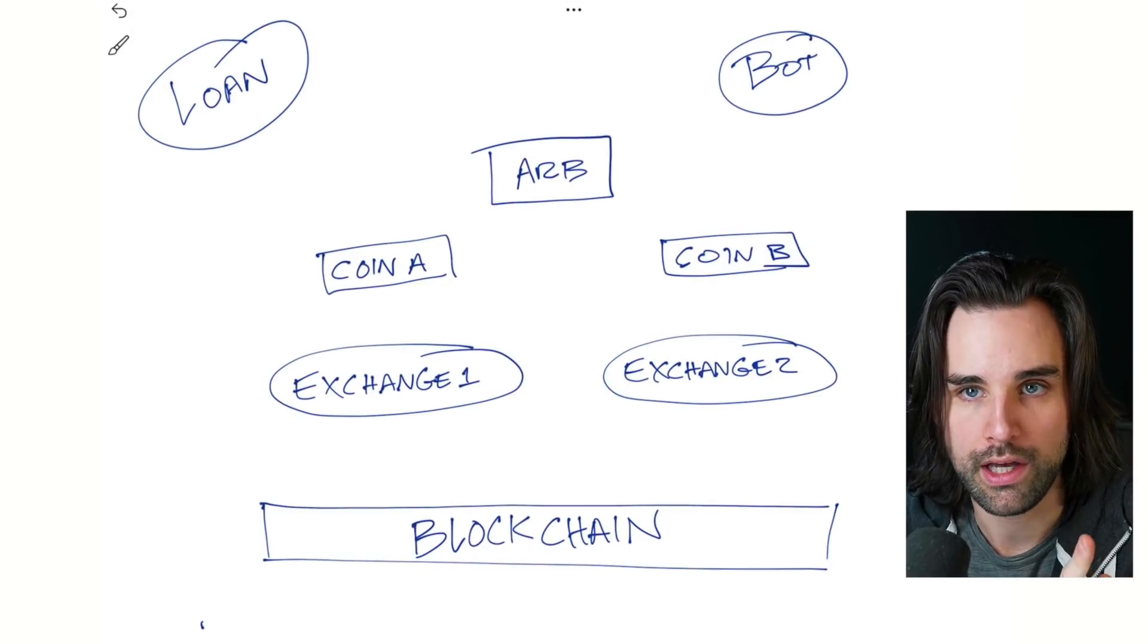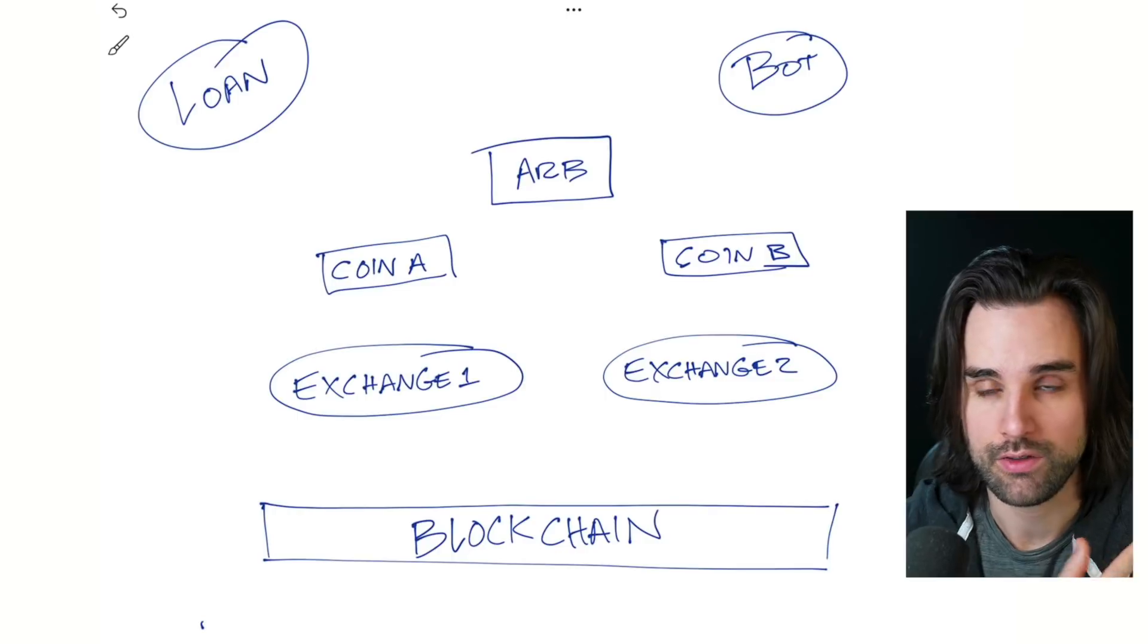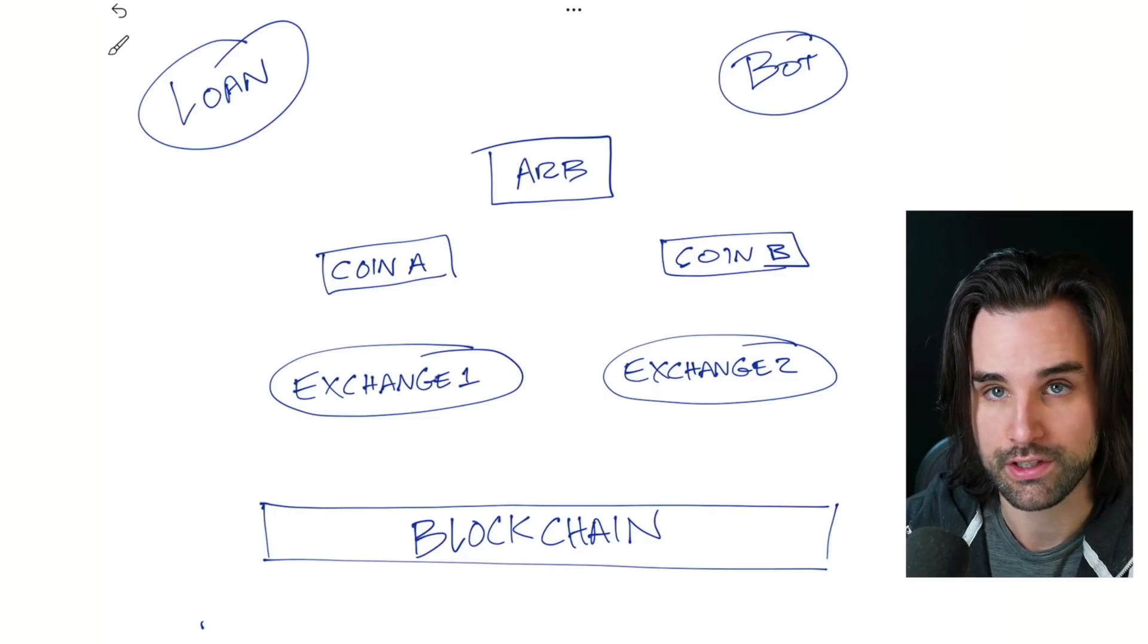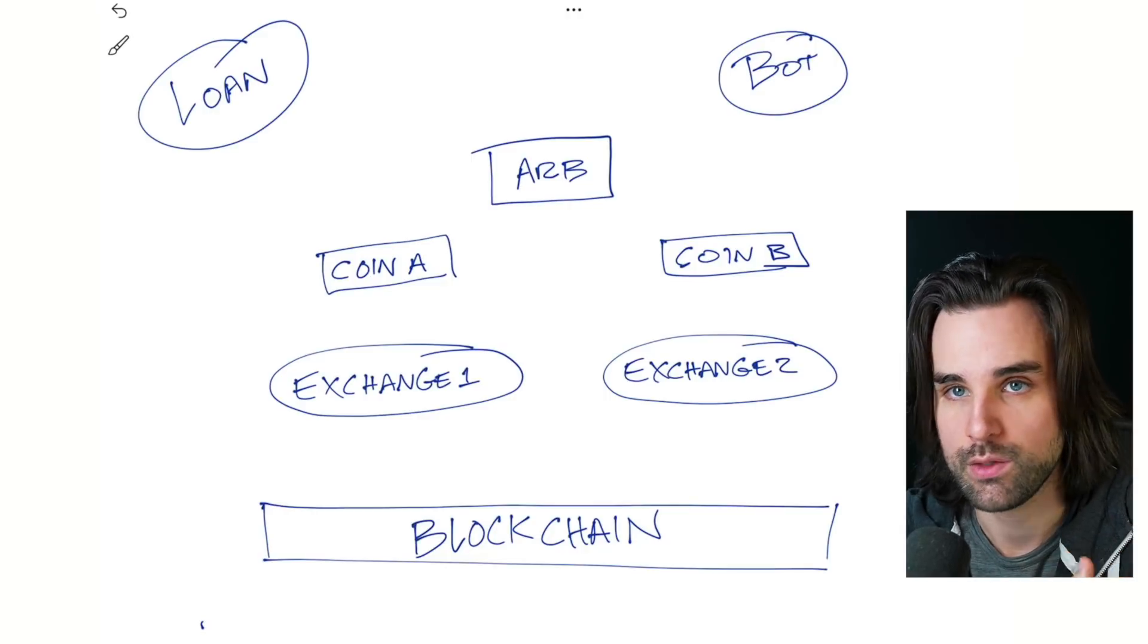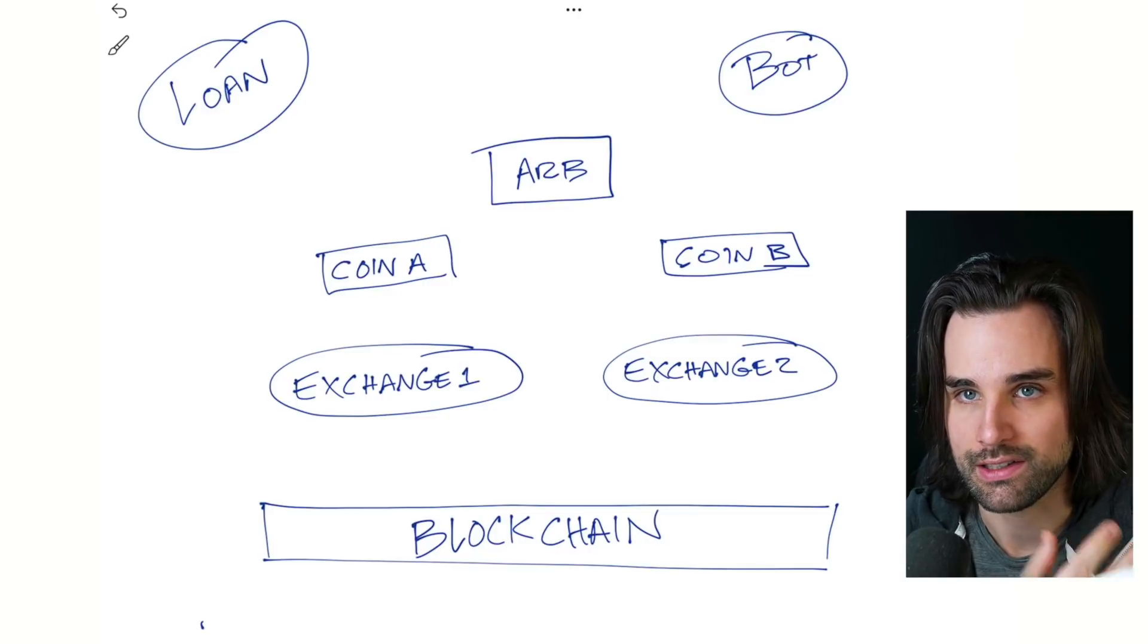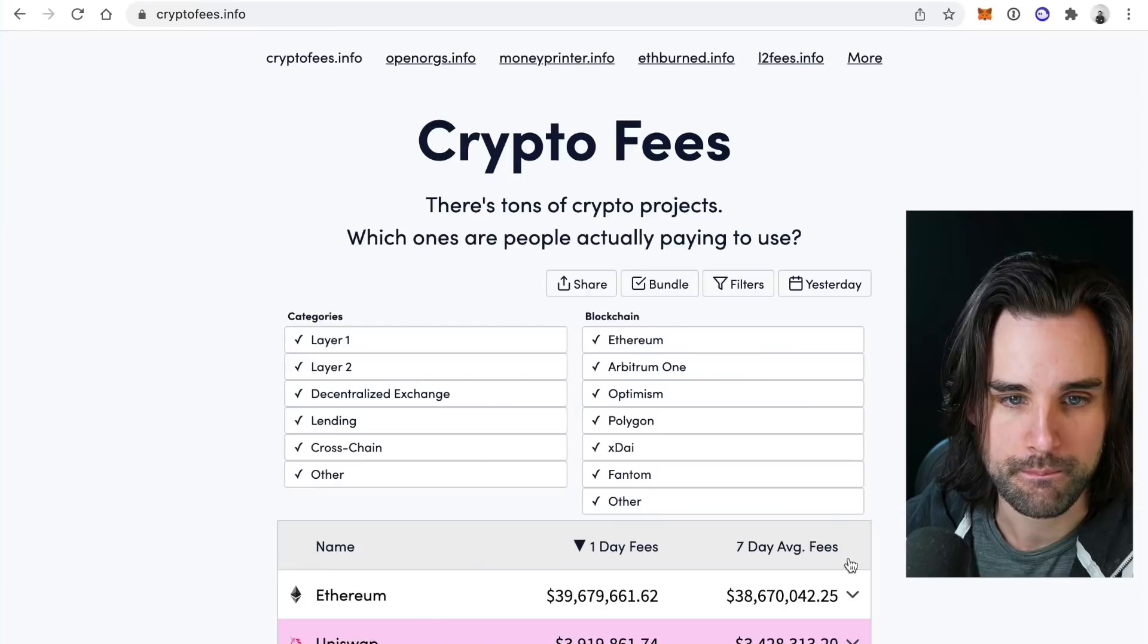This is a huge benefit for this opportunity. If you're a developer and you're going to create smart contracts, which is what you need to know in order to create one of these bots, you have to have a contract that facilitates the arbitrage process and takes out flash loans. You just need one programming language. If you can write a smart contract in Solidity, then you can compile that smart contract for multiple different blockchains.